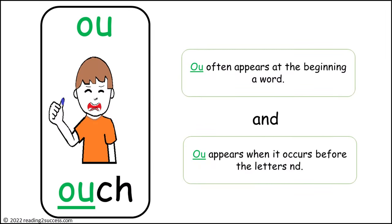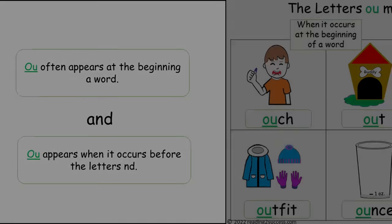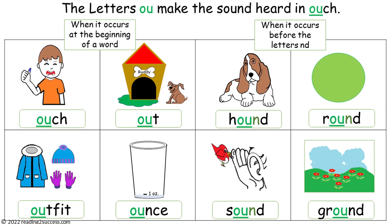Now introduce kids to the two tips for using the letters O-U. Tip one: O-U often appears at the beginning of a word — for example, 'ouch,' 'outfit,' 'out,' and 'ounce.' Tip two: O-U appears when it occurs before the letters N-D. Examples include 'hound,' 'sound,' 'round,' and 'ground.'